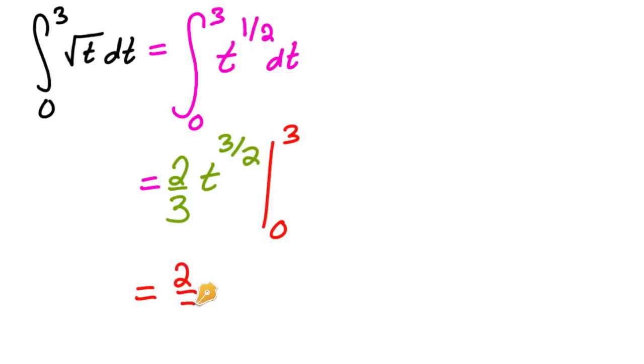So then this is equal to 2 thirds times 3 to the 3 halves minus 0. And so you can simplify this a little bit. This is the same thing as 2 thirds and then the square root of 3 cubed, which is 27.